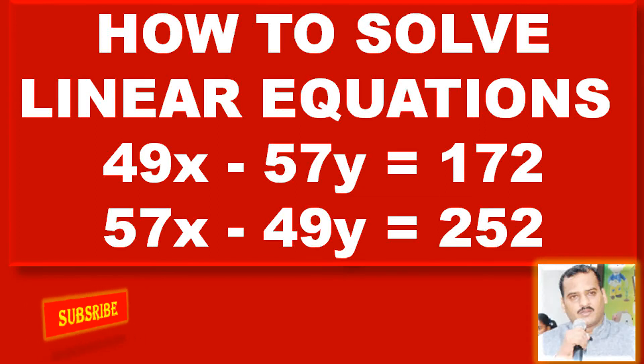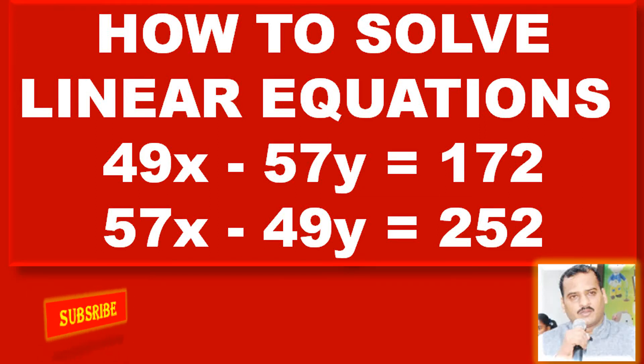Hello friends. Now we have to learn how to solve linear equations: 49x - 57y = 172 and 57x - 49y = 252.